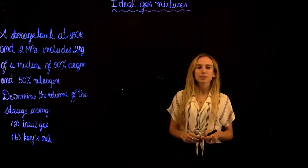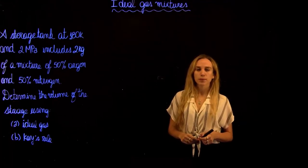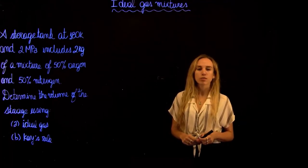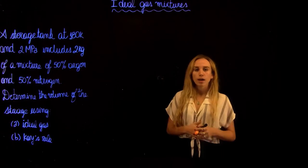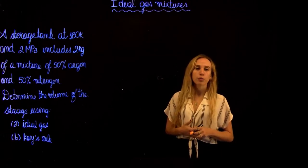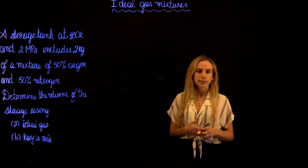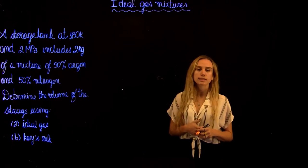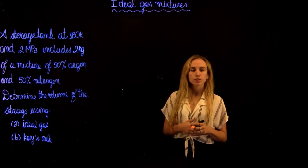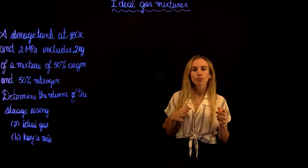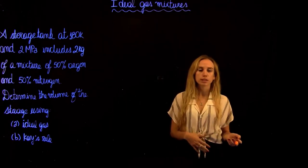Hi everyone and welcome back to Thermodynamics 2 Tutorials with Maria. We're going to be solving an ideal gas mixture problem. We have a storage tank at a temperature of 180 kelvins and a pressure of 2 megapascals that contains a mixture of 2 kilograms composed of 50% argon and 50% nitrogen.